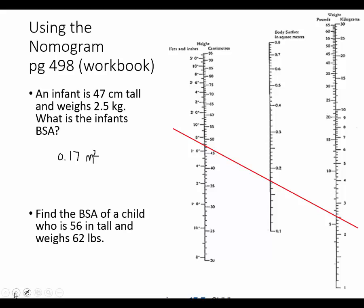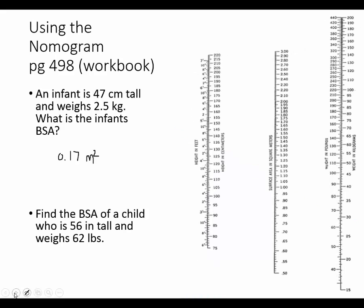The adult nomogram is also on page 498 of your workbook. When I'm looking at the adult nomogram, again on the left is the column for height, and I want to find 56 inches, which would be 4 feet, 8 inches — so that's right here. Then I want to find 62 pounds on the right-hand side. Weight in pounds is in the inner part of this column. Here's 60, there's 65, so 62 would be right here.